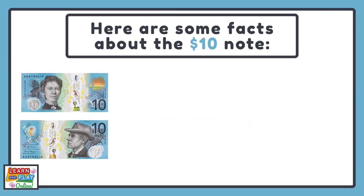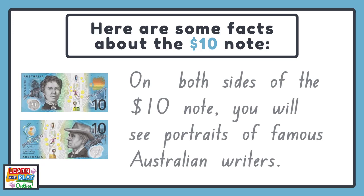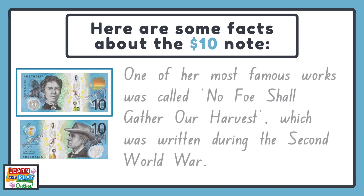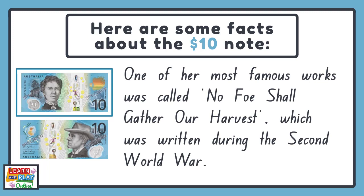Here are some facts about the $10 note. On both sides of the $10 note, you will see portraits of famous Australian writers. On one side of the note is Dame Mary Gilmore, who was born in 1865. In her lifetime, she was a schoolteacher, a poet and a journalist, who was passionate about social issues. One of her most famous works was called No Foes Shall Gather Our Harvest, which was written during the Second World War.